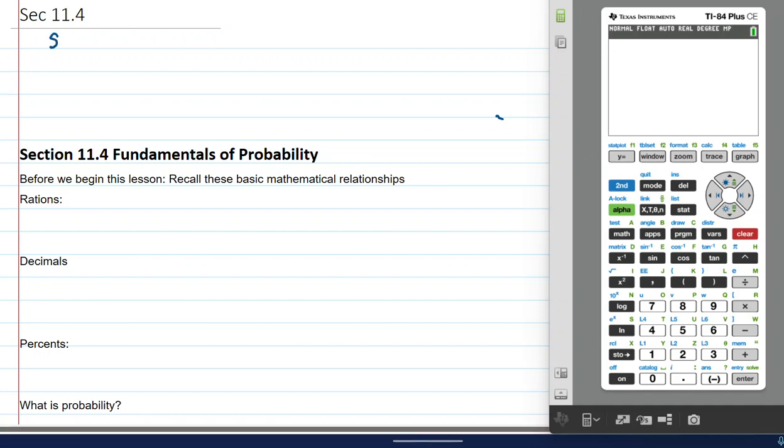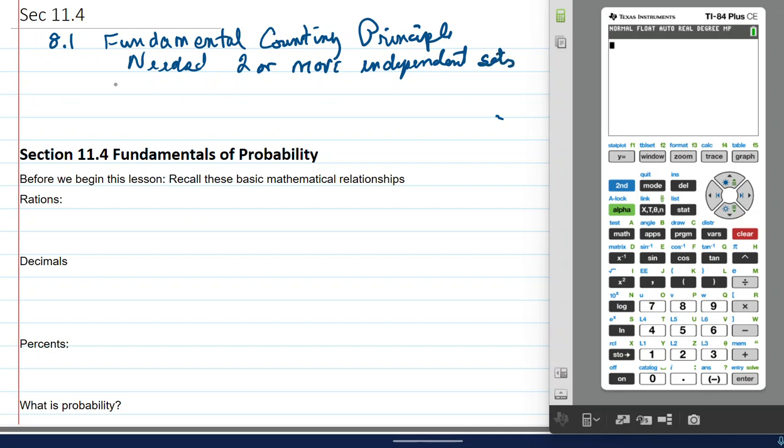So in section 8.1, we studied the fundamental counting principle. And in this counting principle, we learned that we needed two or more independent sets. They don't share anything. Elements.